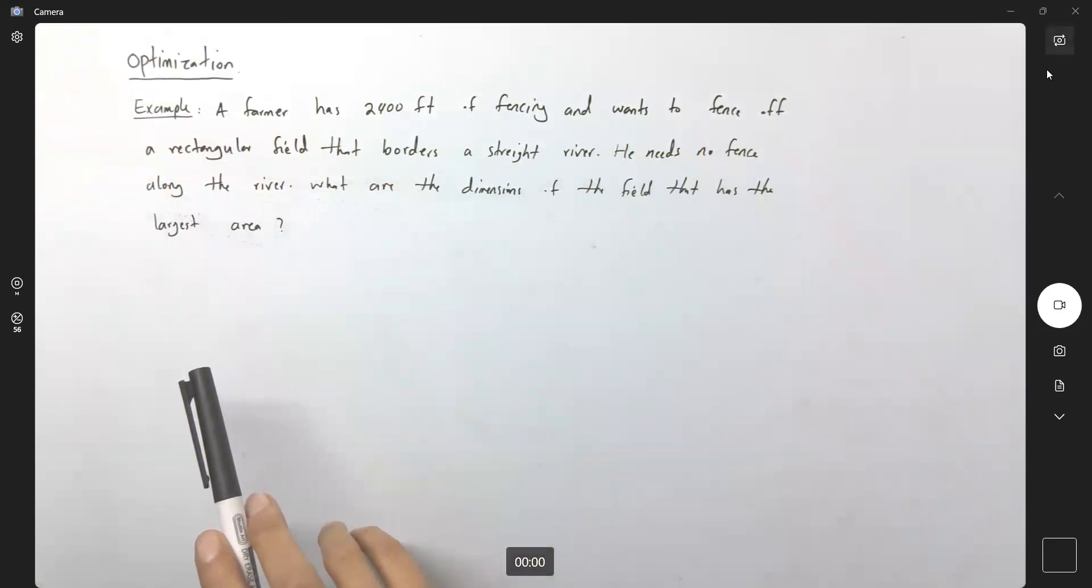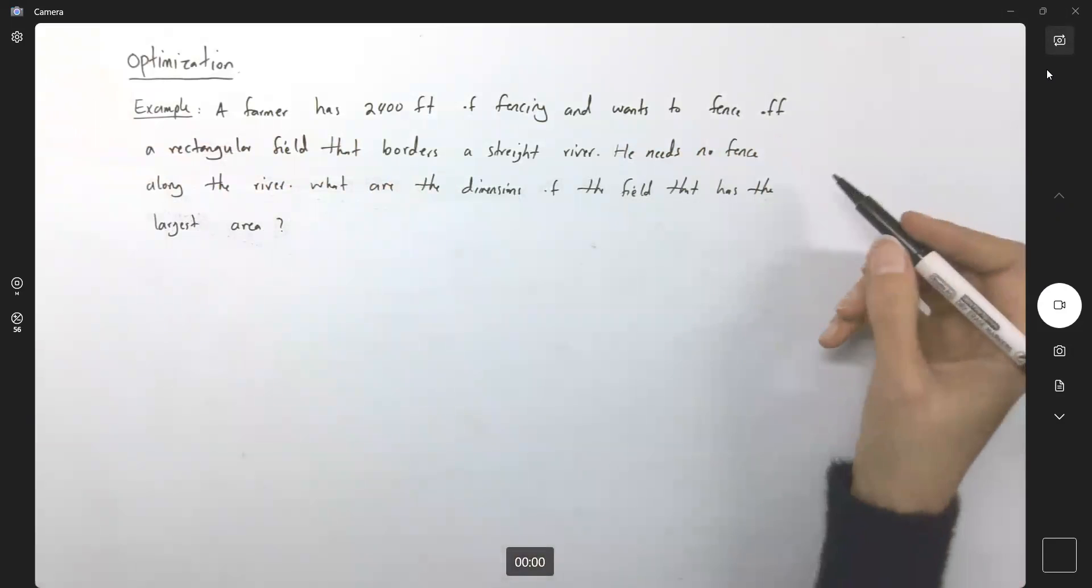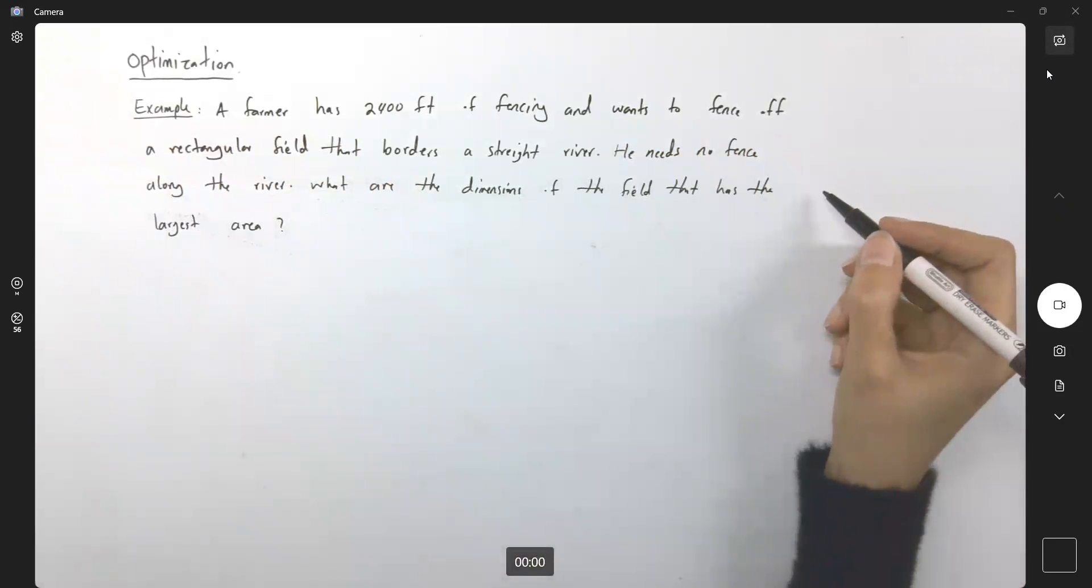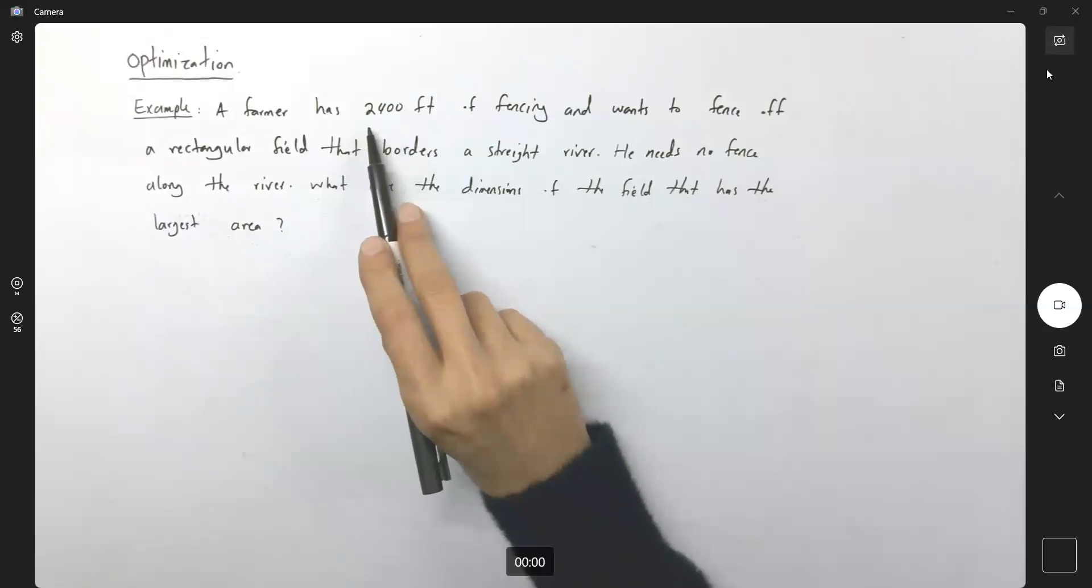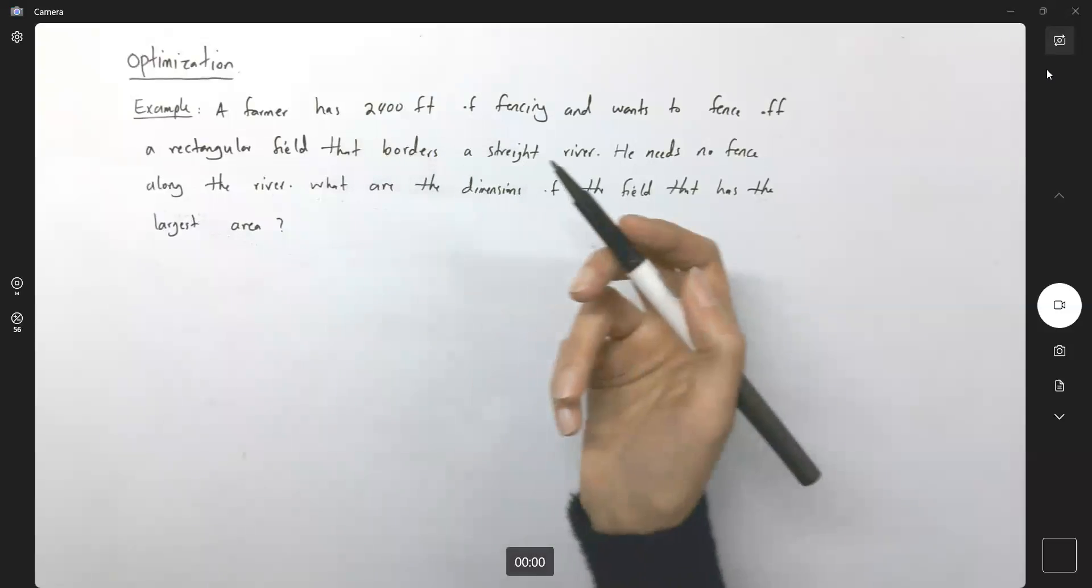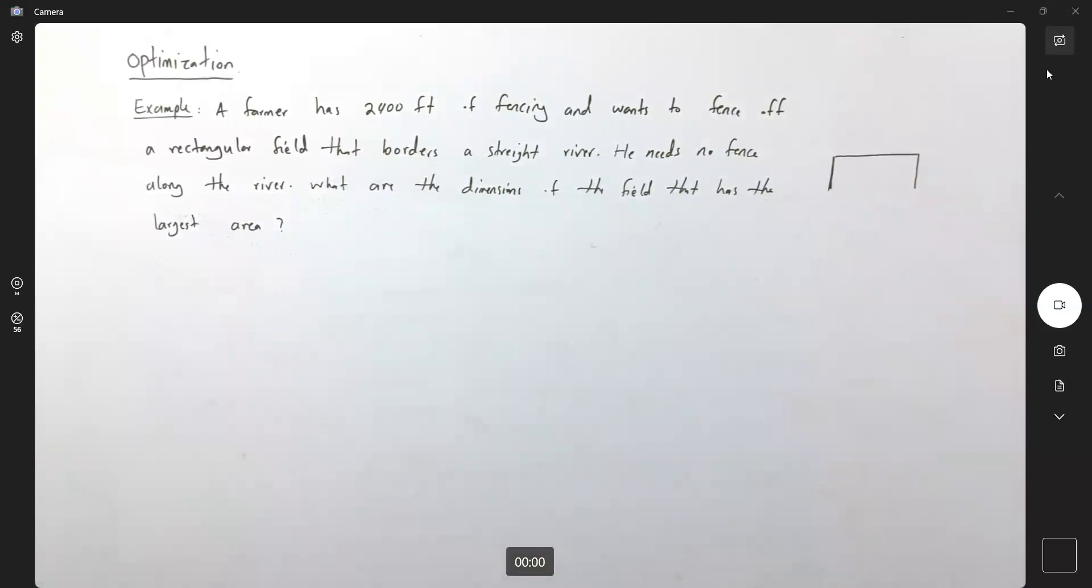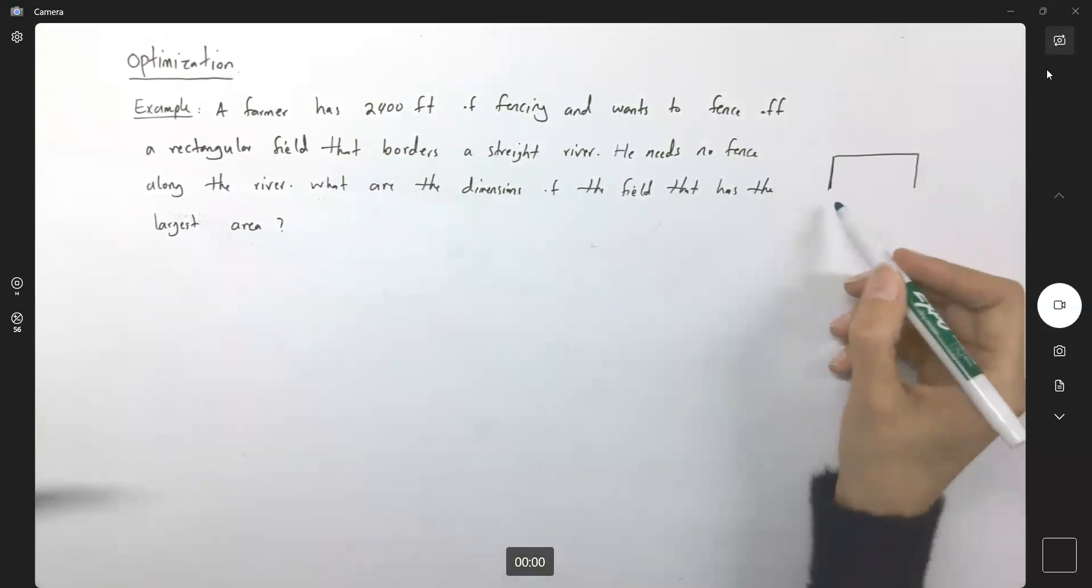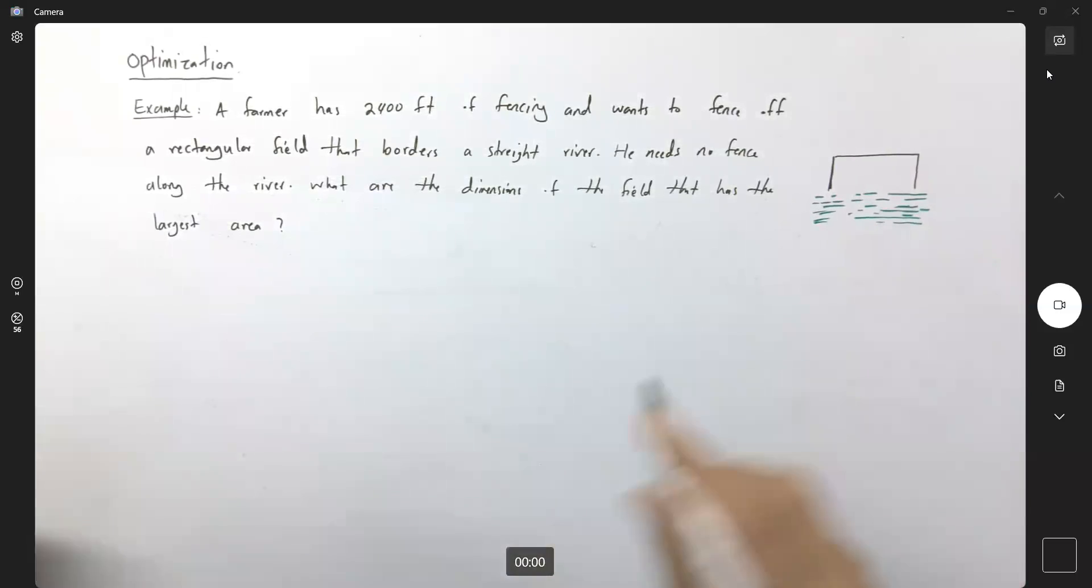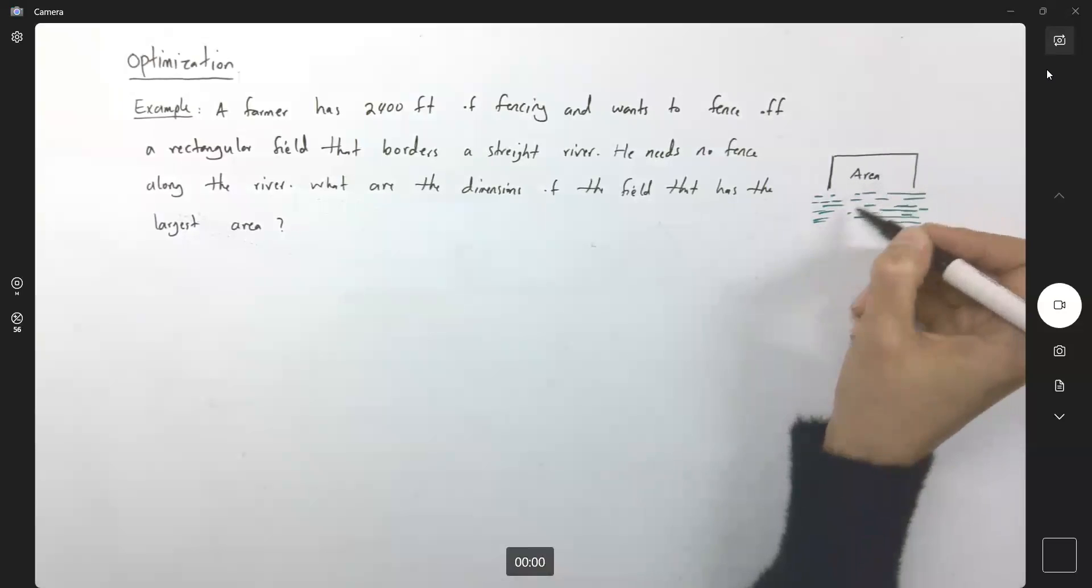Very good. So let us begin. What's the visualization look like? Here you have the following information, 2,400 of fencing. What's the meaning of that? It means that since you are building a rectangular fence and it's along the river, and the river doesn't need any border. This is your river, just moving, and it's a straight river. So our goal is to maximize the area here.